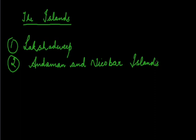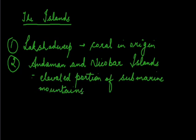A major difference between the two island groups is their origin. The Andaman and Nicobar Islands are said to be an elevated portion of submarine mountains, while the Lakshadweep Islands are coral in origin. There are as many as 200 islands in the Andaman group alone, extending over 350 kilometers. There are 19 islands in the Nicobar group, some extending 60 to 100 kilometers, forming a cluster south of the Andaman group.